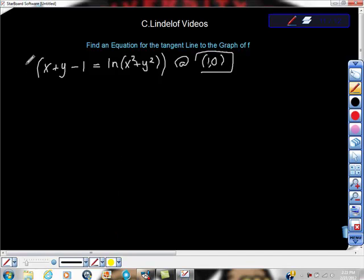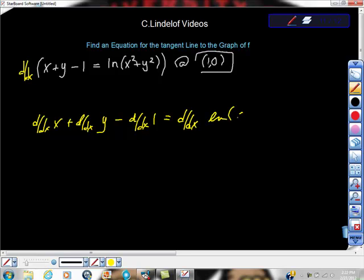So ddx of the whole thing, and some of this we know, but I'm just going to make sure we get this. I'm going to take ddx of x, then I'm going to take ddx of y, and then I'm going to subtract ddx of 1, and then finally going to take ddx of ln of x squared plus y squared. And we're going to go from there.